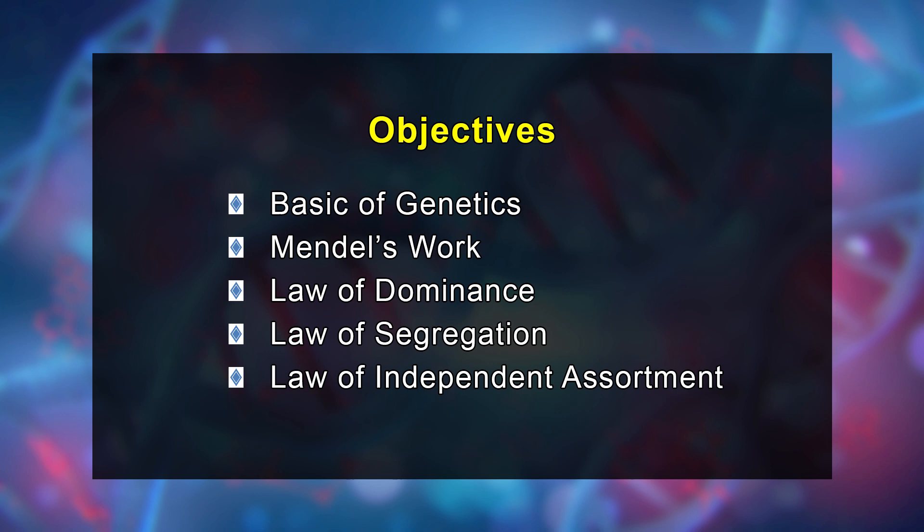Dear students, today's topic is Principles of Genetics. The main objectives of this module are to know about the basics of genetics, to know about Mendel's work, to know about the law of dominance, to know about the law of segregation, and to finally know about the law of independent assortment.